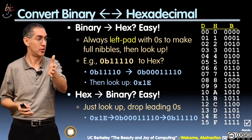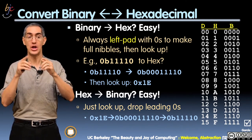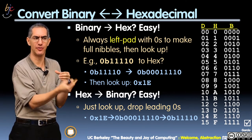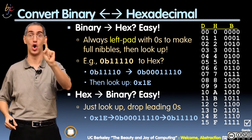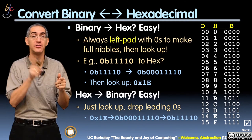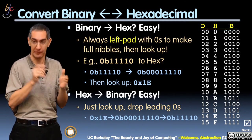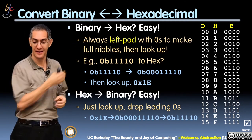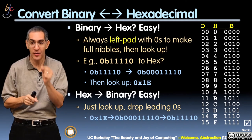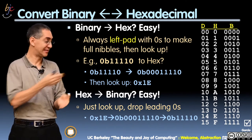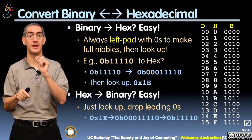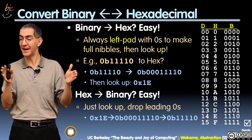Let's do it — 11110. If you do it wrong and don't pad it, you might go: 1111 is F, and then a zero is only one bit, so it's F0. That would be wrong. You have to pad it. Once you pad it, you get 0001 and 1110. Look 0001 up on the table — that's 1 in hex. What's the next group, 1110? Look at the table — that's E. And the answer is 1E. It's not F0, it's 1E. So make sure you always pad it left before you do the conversion.